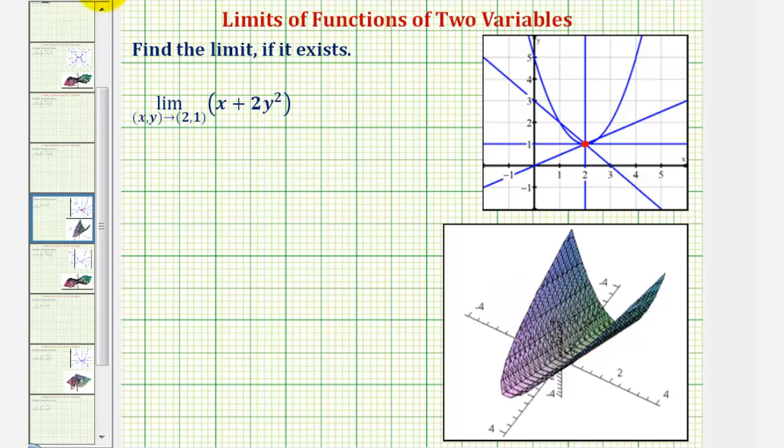So to find this limit, we can simply substitute 2 for x and 1 for y. We don't have to consider various paths shown here that approach the point (2, 1). So our limit is equal to 2 + 2(1)², which is 4.